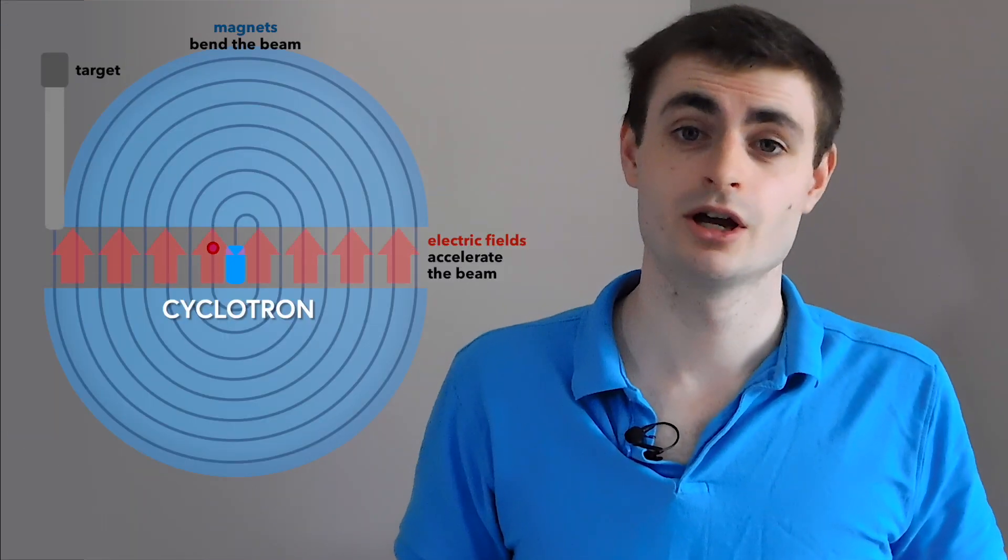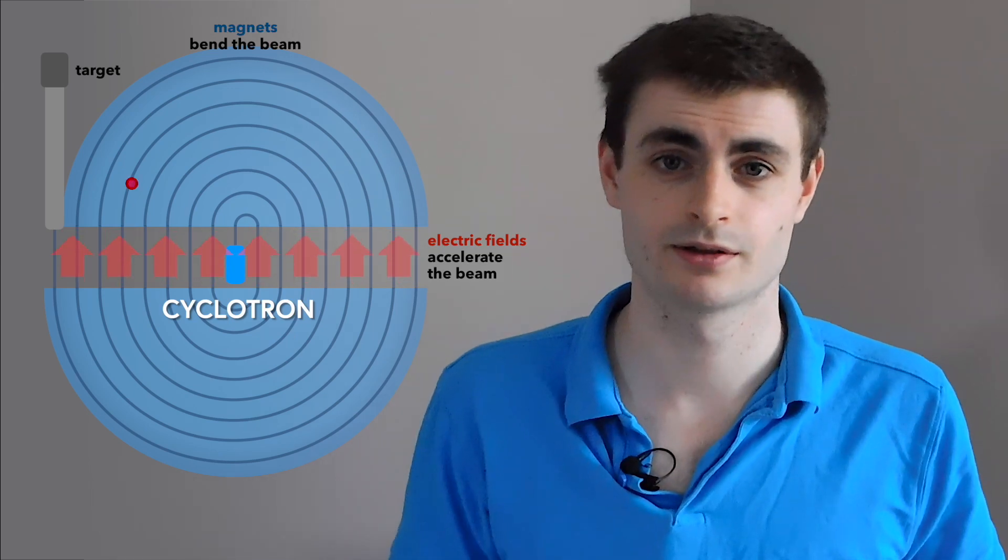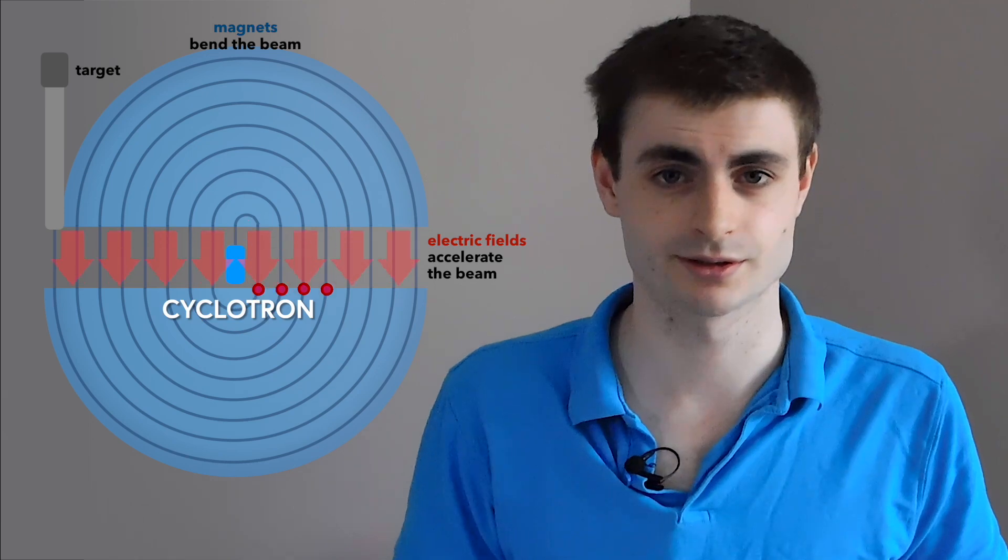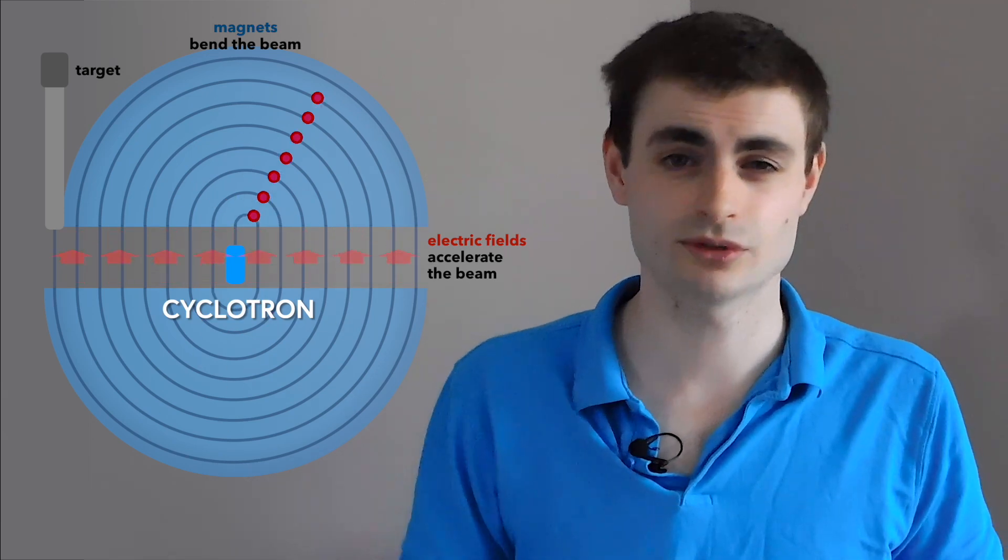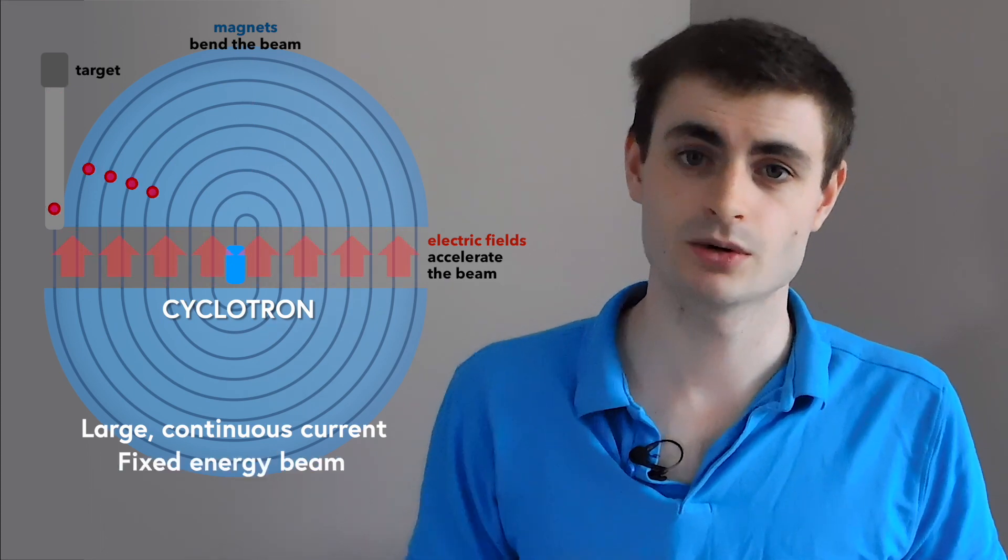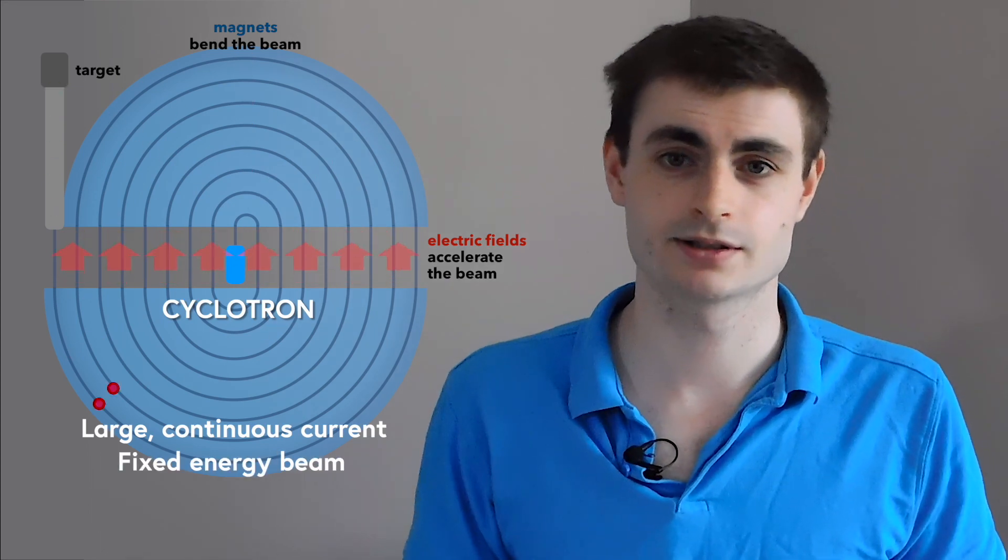Cyclotrons gradually accelerate protons in a spiral path, getting closer to the outside edge until they are ready to be extracted. Cyclotrons are great at producing a large continuous current of protons, but they can only produce it at a fixed energy.